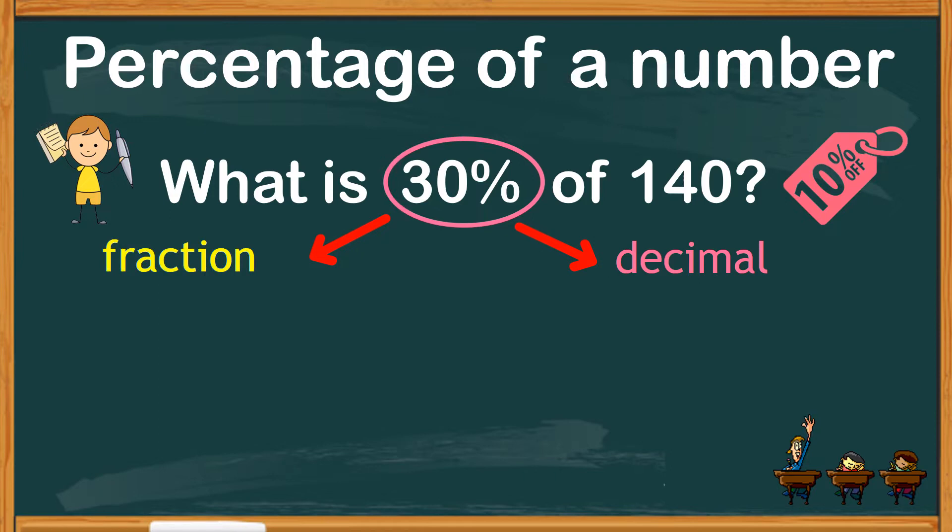In our previous video, we learned that percent is a special fraction where the denominator is always 100. So 30% in fraction is 30 over 100, and the word of means you multiply, in this case, with the number 140.